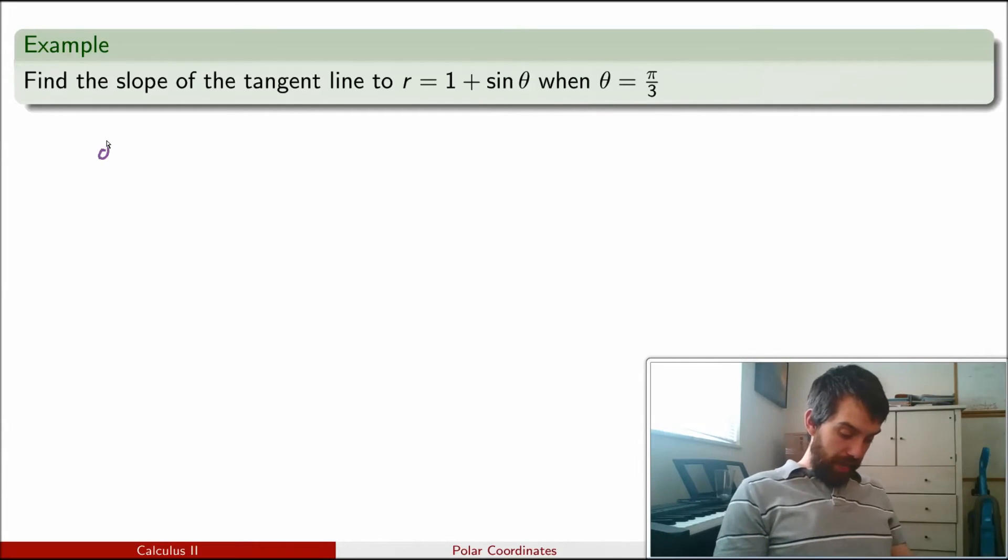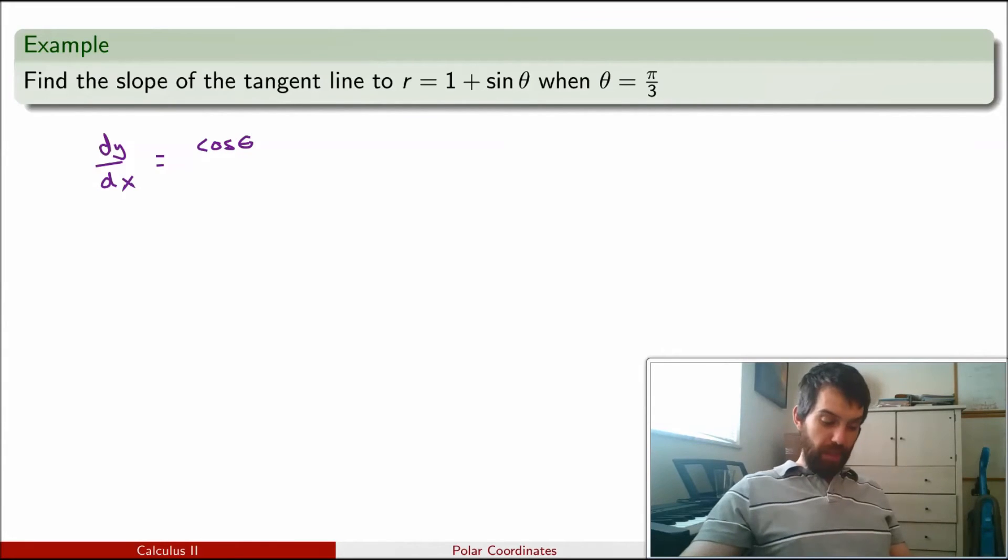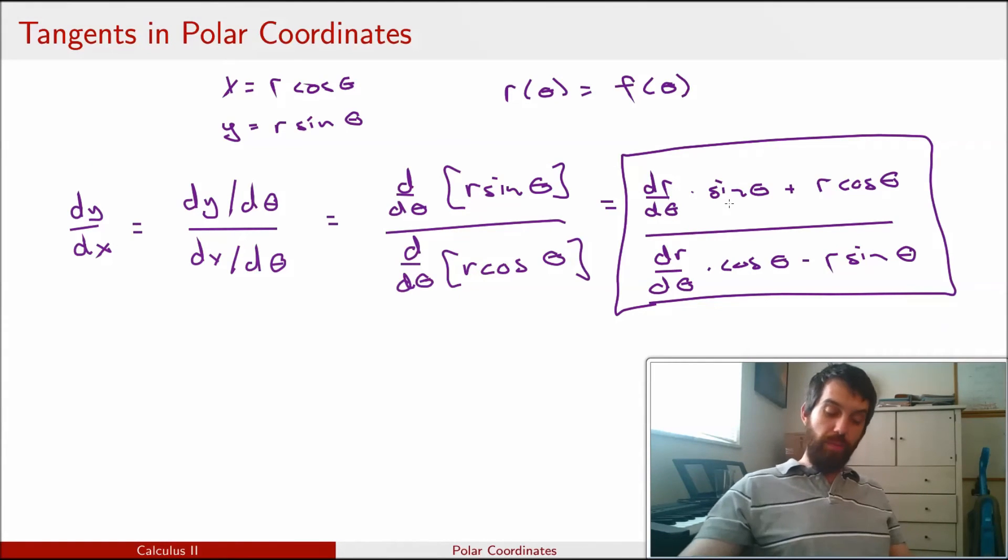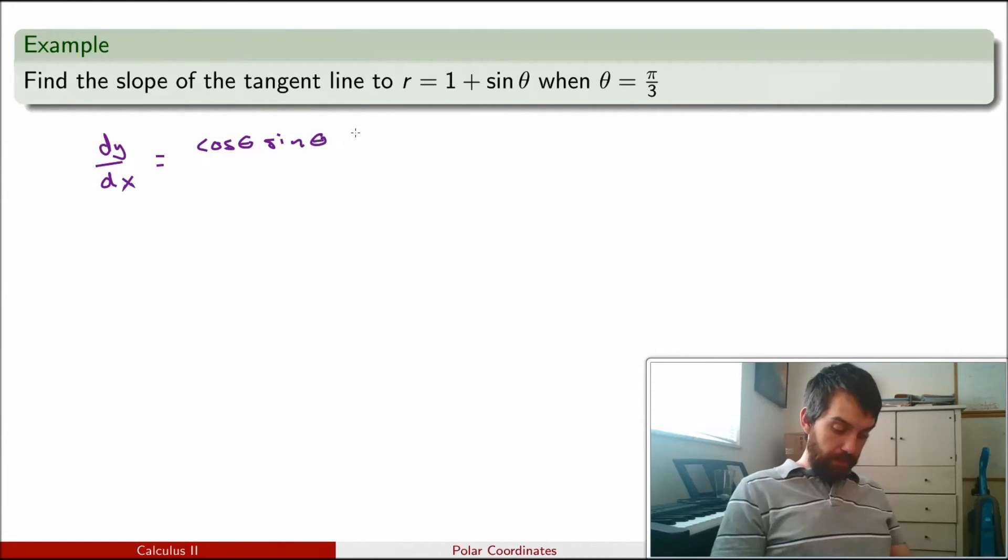So what I need to do then is dy/dx is my formula. According to my formula, if I want to figure out dy/dx, that of course is the slope of the tangent line. First thing I need to figure out is what dr/dθ is going to be, so that's just going to be cosine of theta. Then if I look back at my formula that was dr/dθ, then I needed to multiply by sine theta, so I'm going to multiply by sine theta. And then I add to it r, and r is just 1 plus sine theta. And looking back at my formula, after I multiply by r, it's cosine of theta, so cosine of theta. So that's the top.